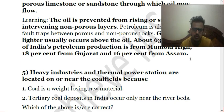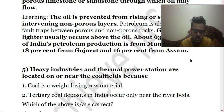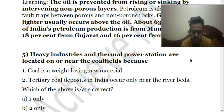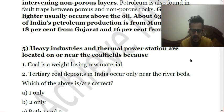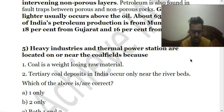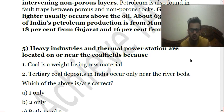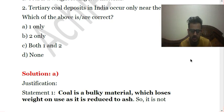The fifth question is: heavy industries and thermal power stations are located on or near the coal fields because — one, coal is a weight-losing raw material; two, tertiary coal deposits in India occur only near the river beds. Coal is indeed a weight-losing raw material because it is a bulky substance and reduces to ash, becoming very poor quality if transported over long distances. That is why thermal power stations and heavy industries are located near coal fields. However, the second statement is wrong — tertiary coal deposits do exist in India, found basically in the Northeast, but they are not confined only to near river beds. So the answer is A — one only.